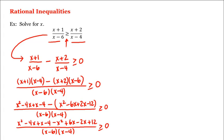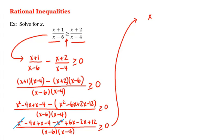And now distributing the negative and combining like terms in the numerator: the x squared terms cancel. Combining all the x terms: negative 4x plus x is negative 3x, plus 6x is positive 3x, then minus 2x is positive x. And the numbers combine to give us negative 4 plus 12, which is 8.